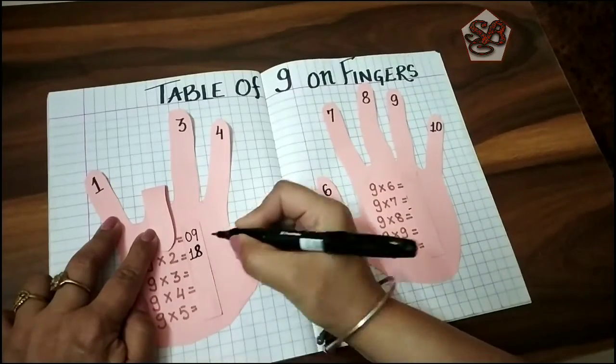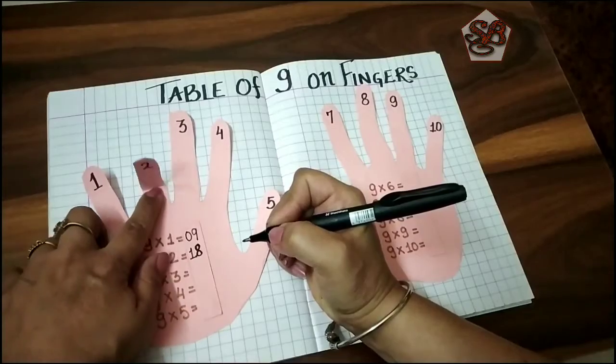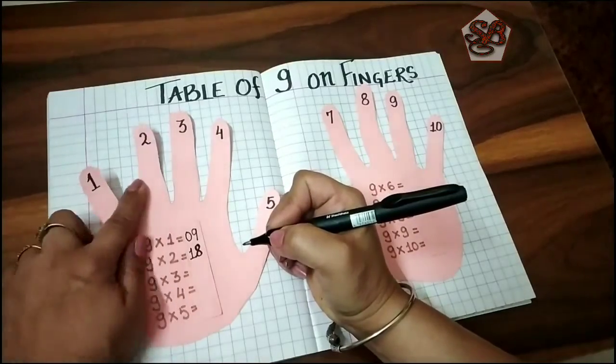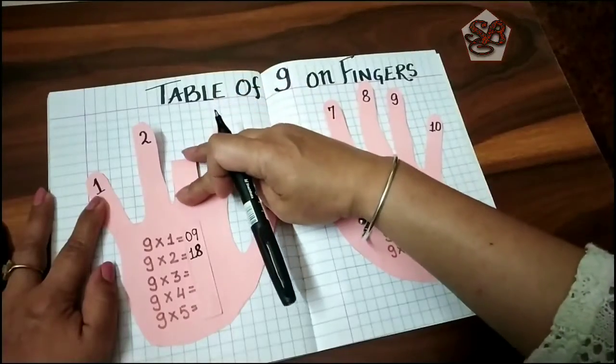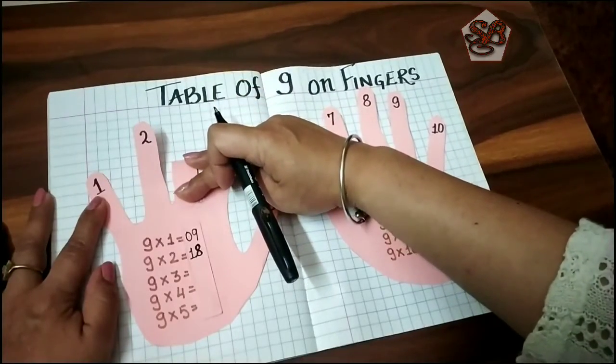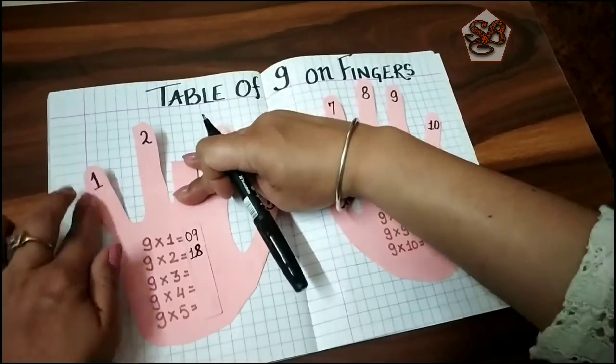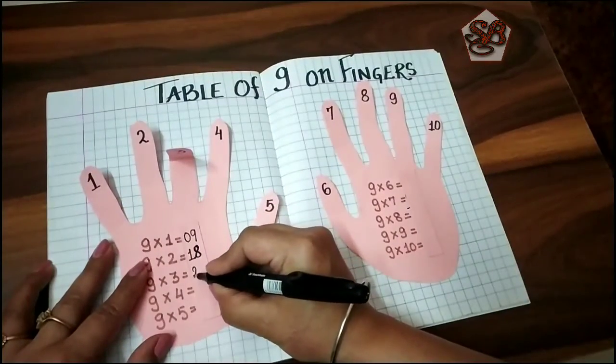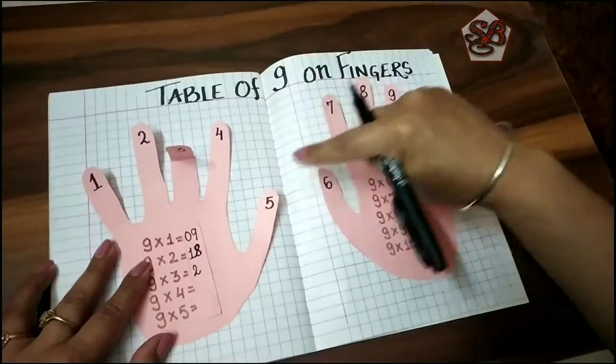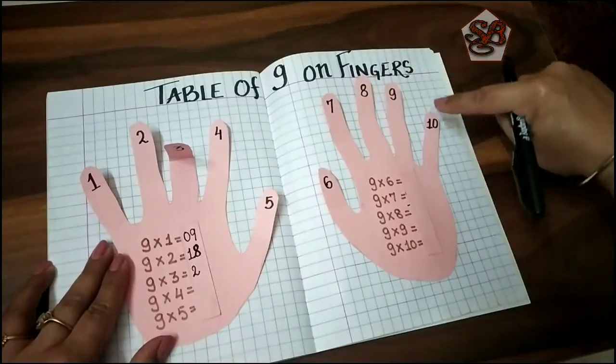Let's continue further. Fold the third finger. Nine threes are - two on this side so we write here two, and one, two, three, four, five, six, seven. So nine threes are twenty-seven.